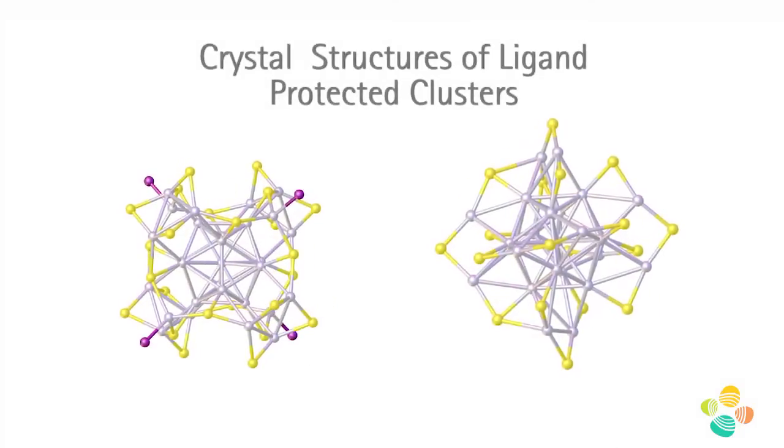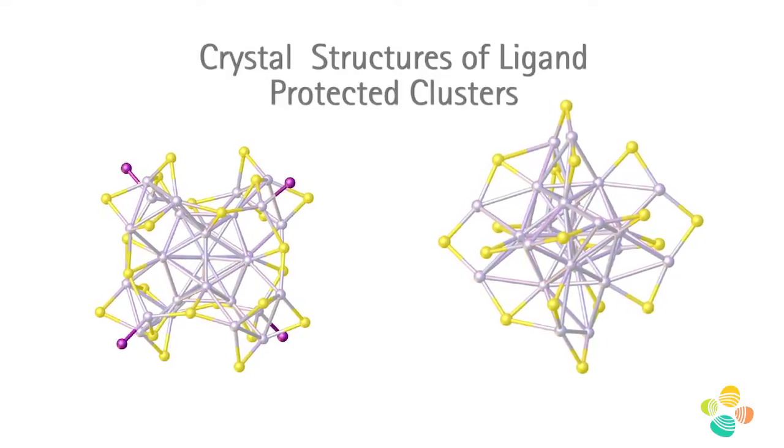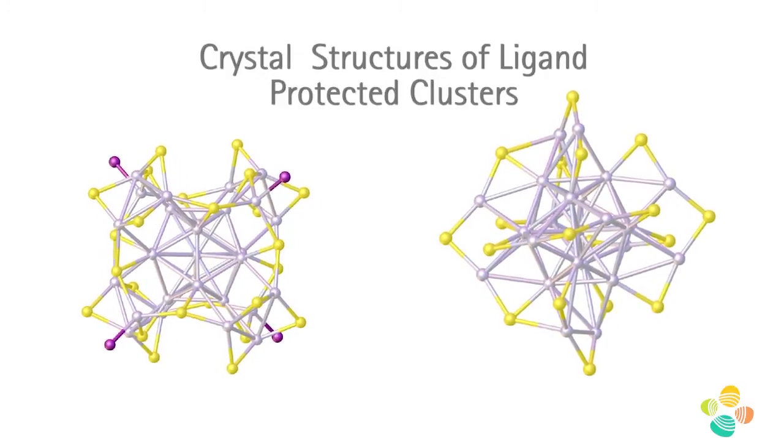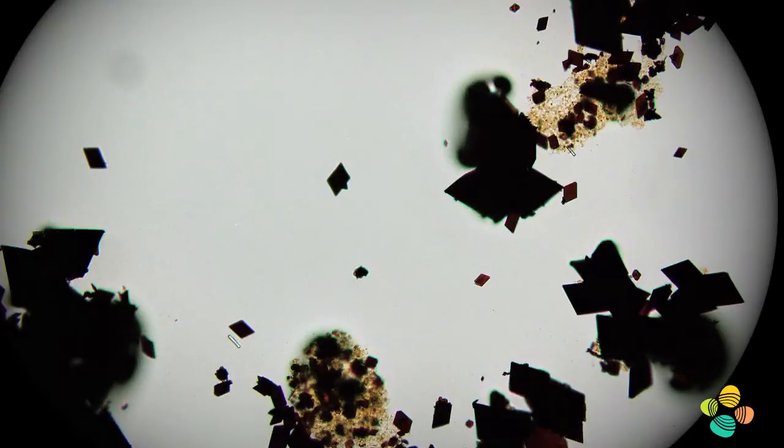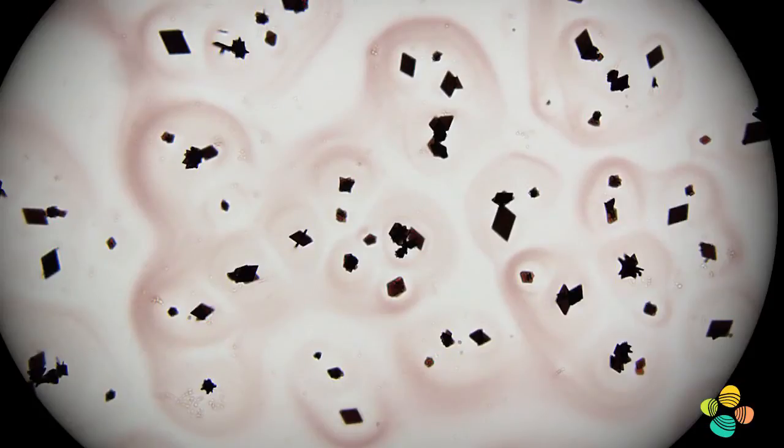And nanoclusters, what makes them really special is that they can come together and crystallize into a real molecular crystal unlike normal nanoparticles. Because of the precise nature of these nanoclusters, we can start thinking about creating artificial materials from the ground up and that was one of the aims of my lab.